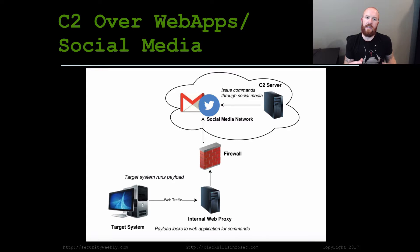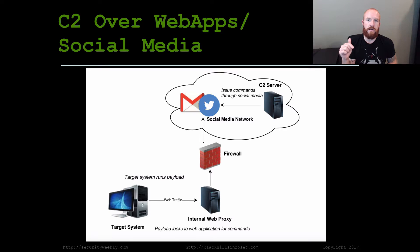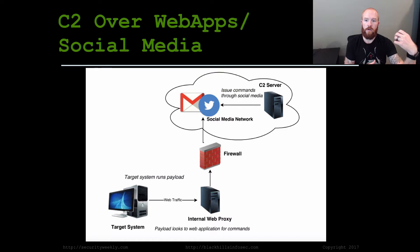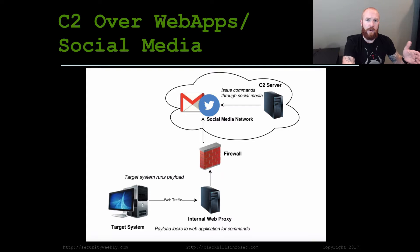C2 over web apps and social media is similar to HTTPS through a web proxy, but instead of a direct connection to a C2 server, we do C2 through various websites. Tools like GCat provide a C2 channel through Google's Gmail, and there's one for Twitter as well. The media website is actually providing the commands to the payload that was initially run on the desktop. To your firewall, this just looks like common web traffic to websites people visit on a regular basis.